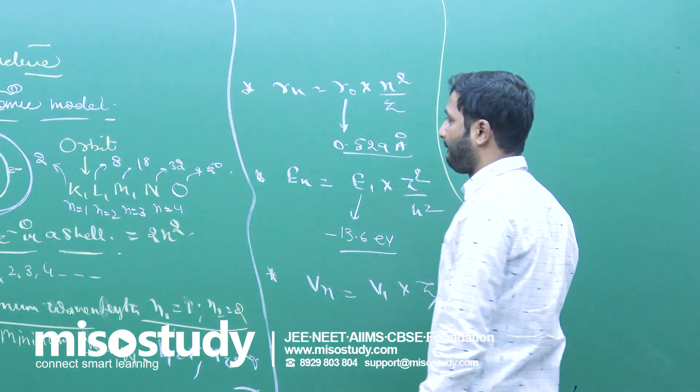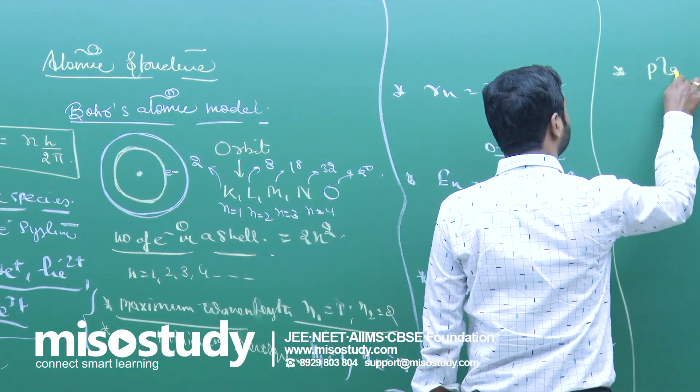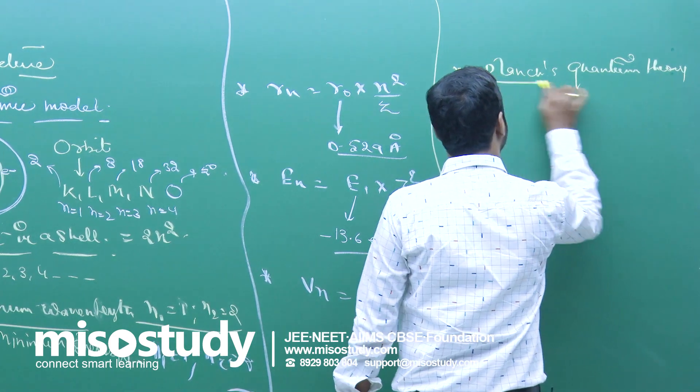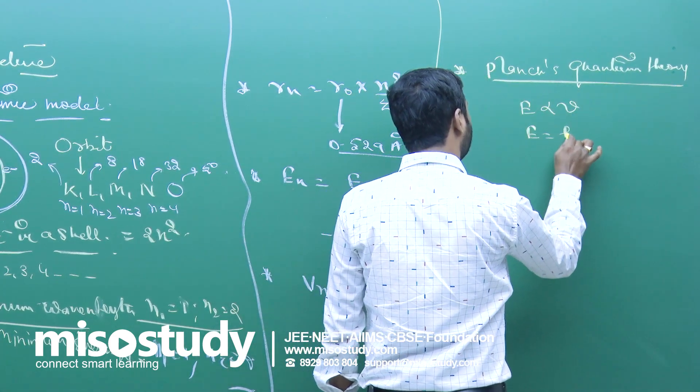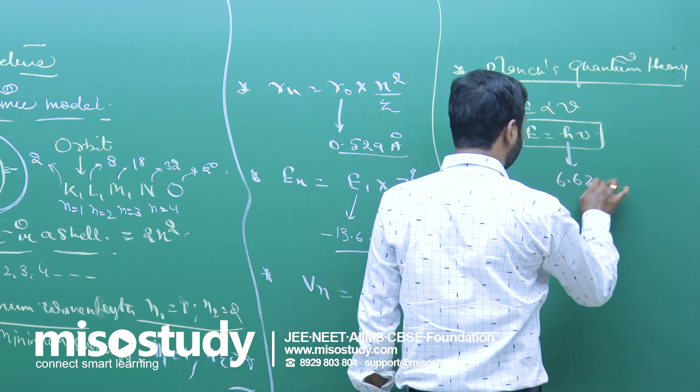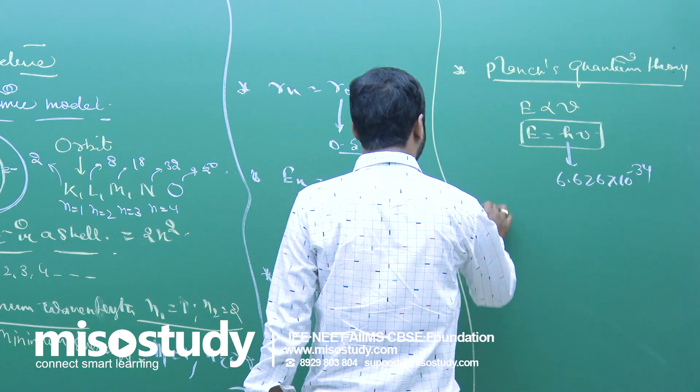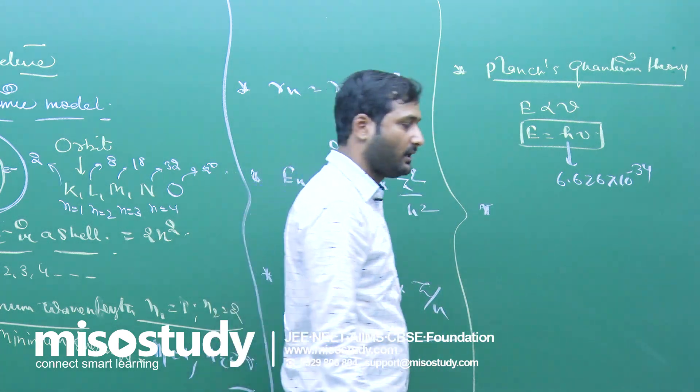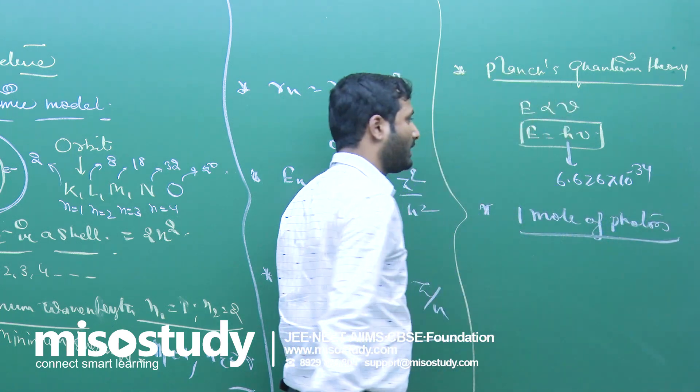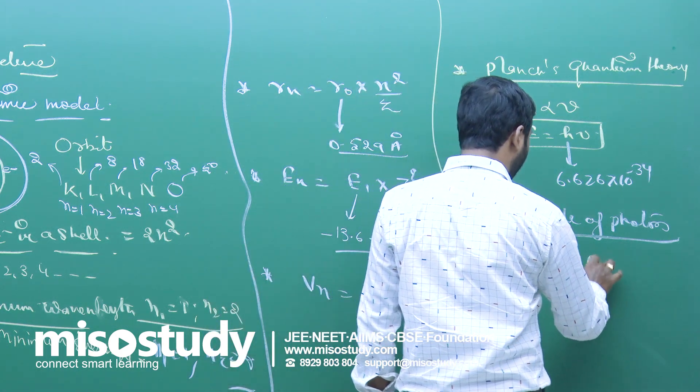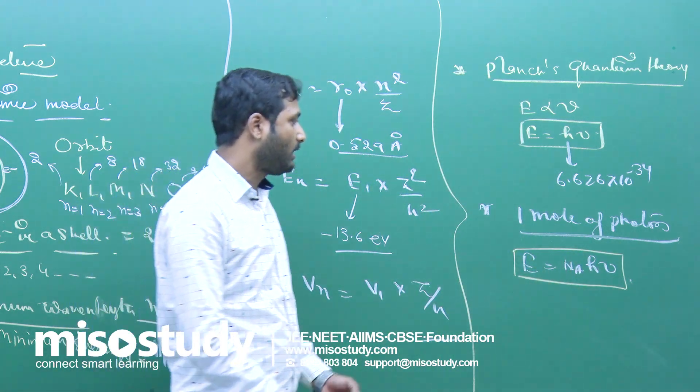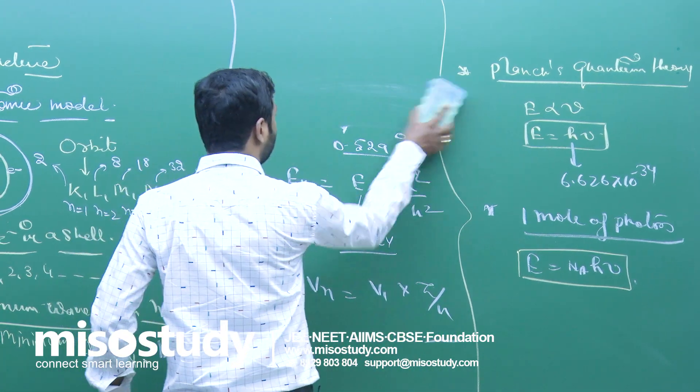Next one is Planck's quantum theory. Max Planck's quantum theory. What is Max Planck's quantum theory? E is directly proportional to ν, E equals hν. What is h? That is Planck's constant. The value of Planck's constant is 6.626 into 10 to the power minus 34. If anyone asks you energy of 1 Einstein, that is 1 mole of photon. Energy of 1 mole of photon is called 1 Einstein, that is E equals NAhν.